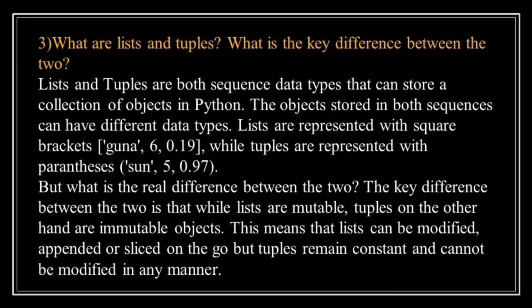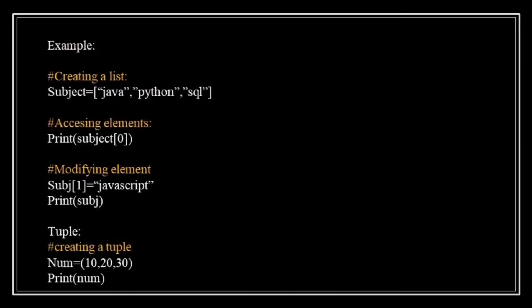This means a list can be changed, updated, or removed. But tuples remain constant and can't be modified. Let's understand with an example. Here, we create a list named 'subject' containing three elements: Java, Python, and SQL. We access the first element of the list using its index 0. We change the second element of the list from Python to JavaScript. If we want to add an element, we use the append method to add a new element. If we want to remove an element, we use the remove method to delete an element from the list.